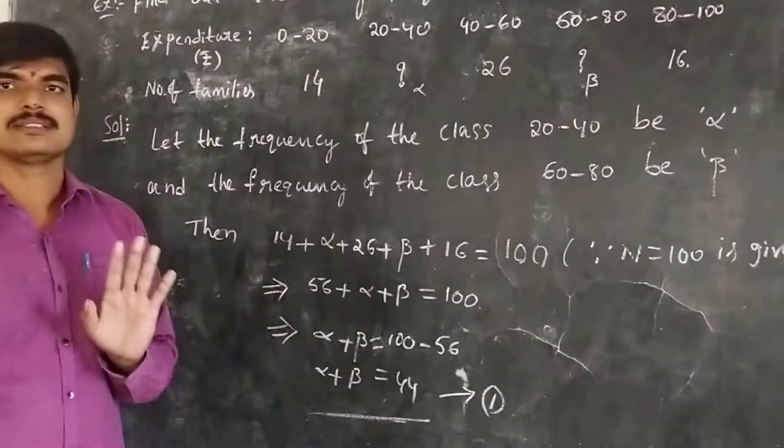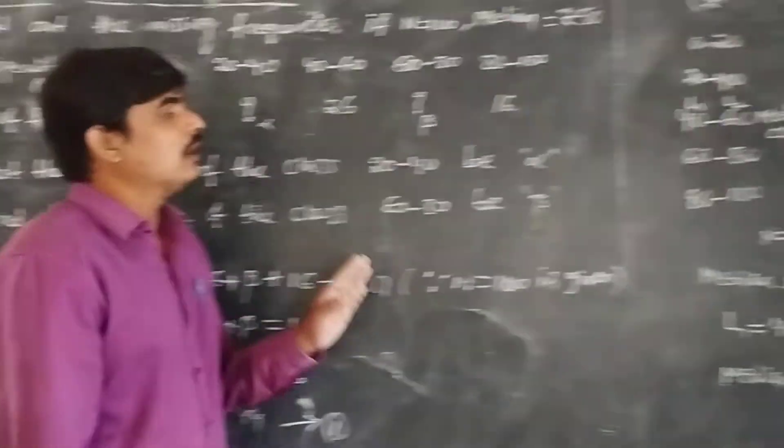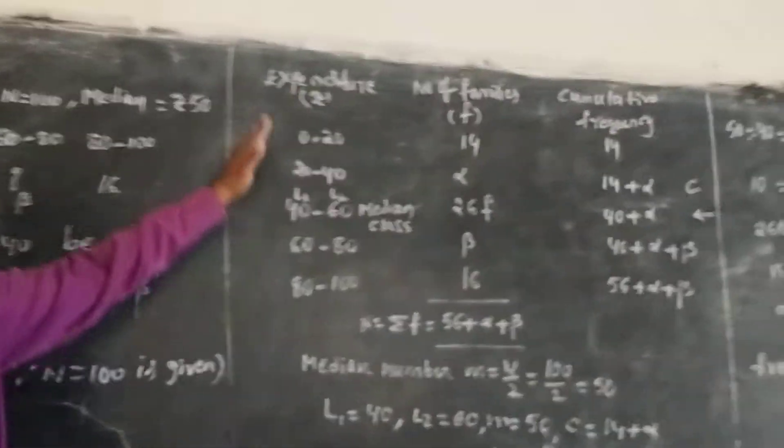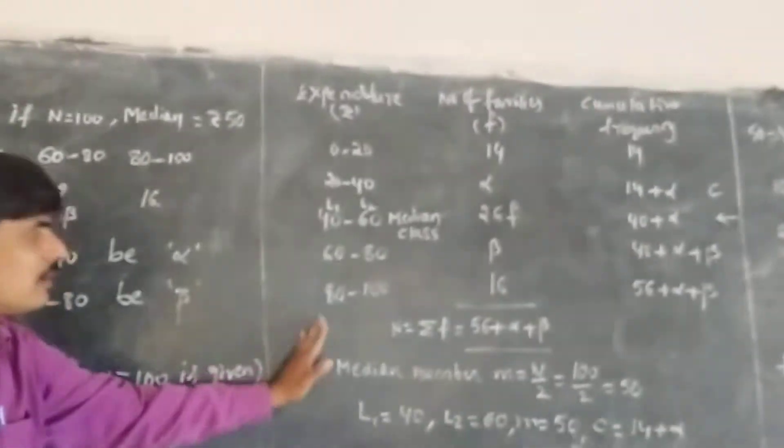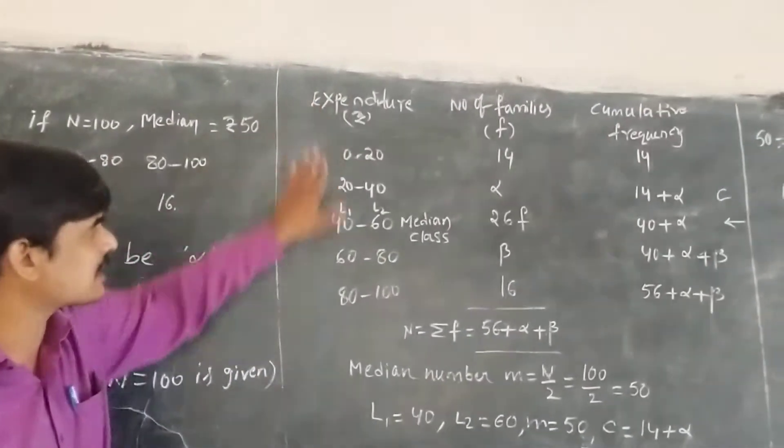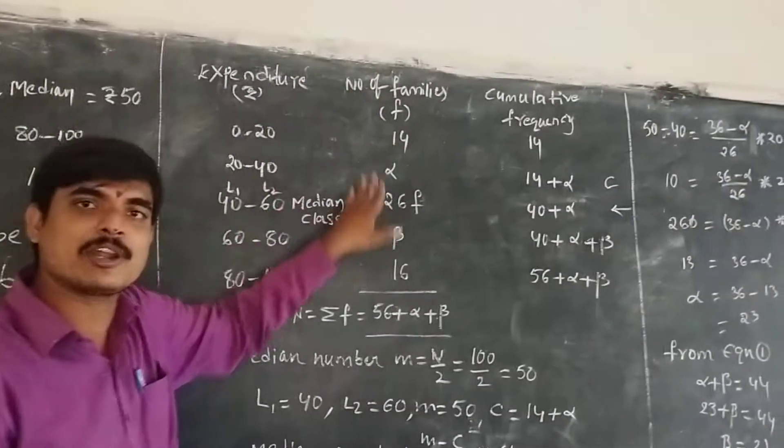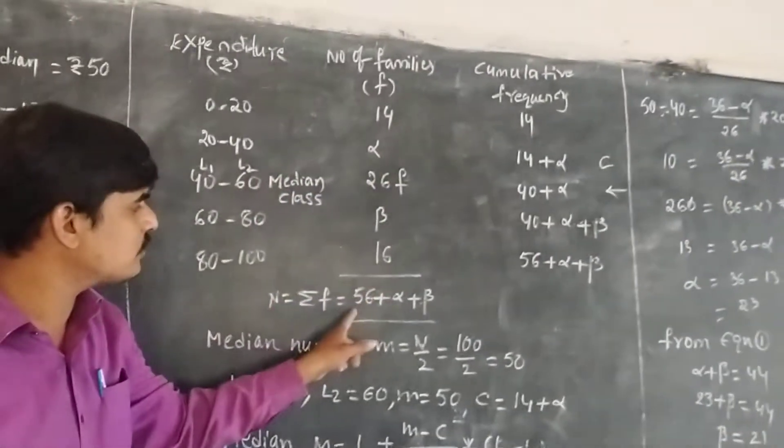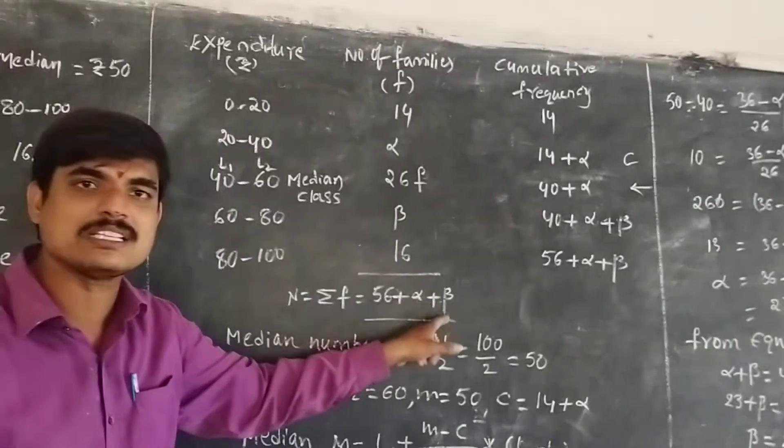Next, we formulate the given data into vertical form. This is the expenditure, these are the number of families—the frequency. The summation of values is 56 plus alpha plus beta.